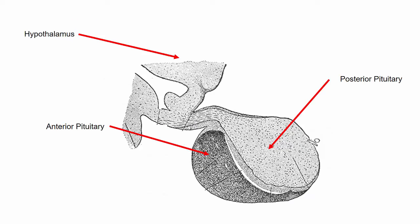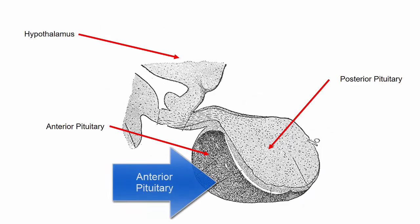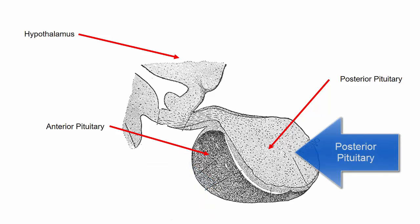The anterior pituitary, shown here in the darker color, arises from glandular tissue that bubbles up from the developing oral cavity. The posterior pituitary, shown here in the lighter color, is actually a downward projection of brain tissue.